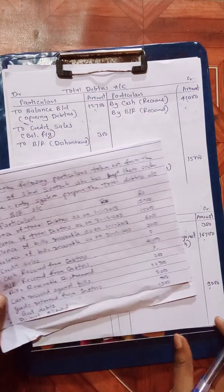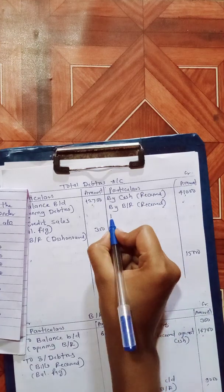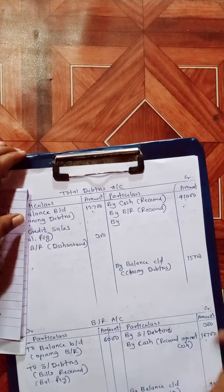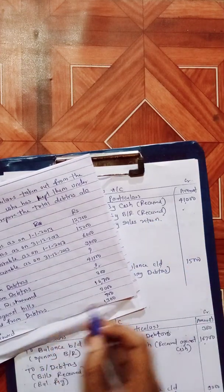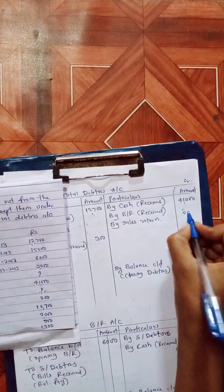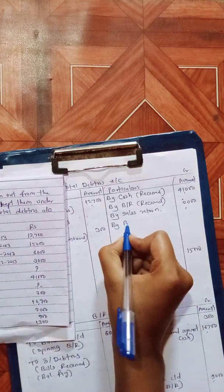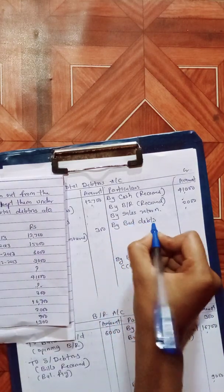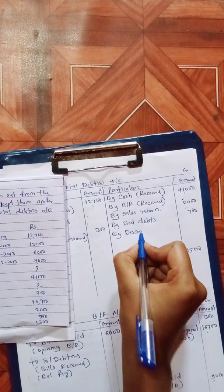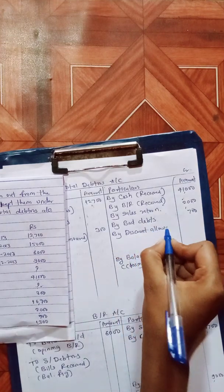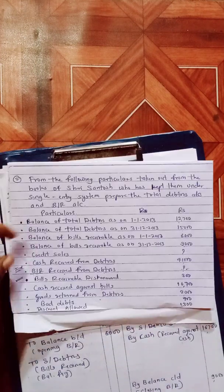Goods returned from debtors means sales return — this is related to the debtors account, so write 'by sales return' or 'goods return.' The amount is 2,000. Then bad debts and discount: both are debtors account transactions on the credit side. Bad debts is 700 and discount allowed is 1,300.